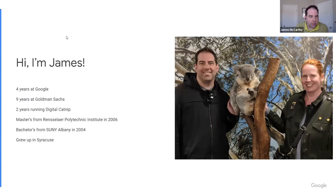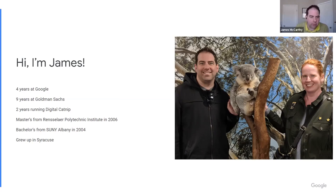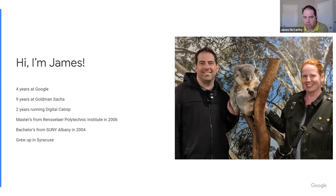I've been at Google for four years. Before that, I spent nine years at Goldman Sachs, and for two years I ran my own mobile app consulting company called Digital Catnip. I built about 10 apps in a year for customers — it was primarily startups. Most of the apps are not that successful. I have a master's in computer science from RPI and a bachelor's, double major in business and computer science at SUNY Albany.